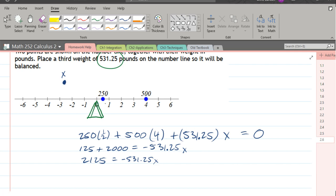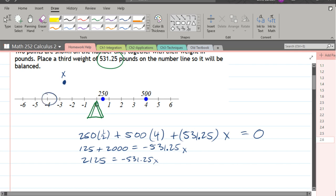And it looks like it's somewhere close to negative 4, so somewhere in that area is where this weight is going to need to be to counteract or cancel out these two weights on the right side.